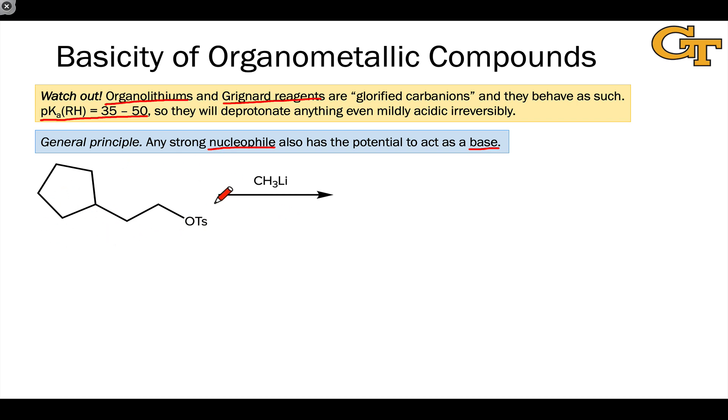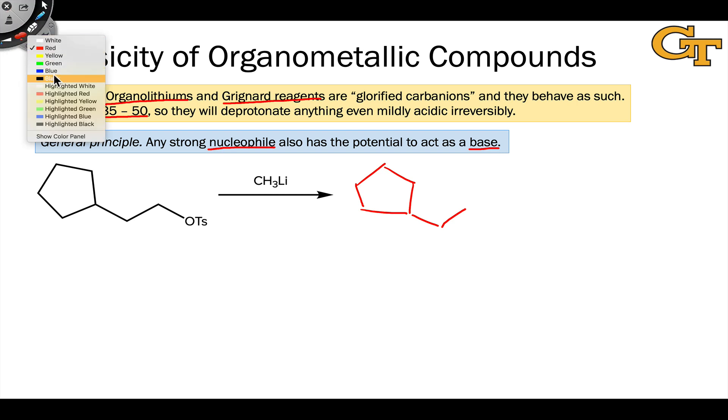For example, say we started with an alkyl tosylate like this, and our goal was to perform a substitution reaction using methyl-lithium to methylate it. This looks like a great way to establish a carbon-carbon bond, since the carbon linked to the tosyl group is electrophilic, and the methylcarbon in methyl-lithium is nucleophilic.